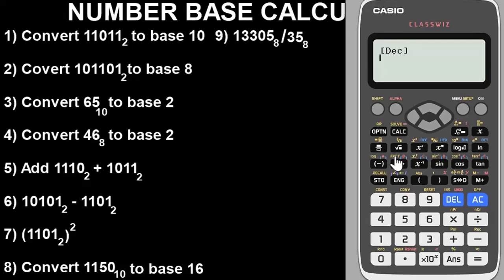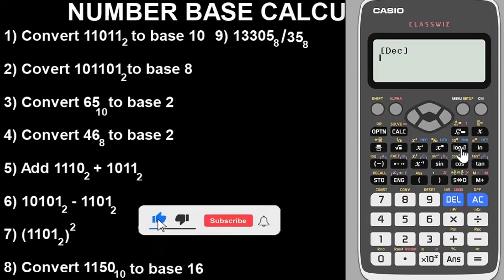Once you click on it, it will bring you to this screen. This shows Decimal, which is base 10. Now another term for decimal is Denary, or base 10 — they mean the same thing. Question one says convert 11011 base two to base 10. That means we need to put the calculator in Binary mode. Another word for binary is base two. To switch from Decimal to Binary, look at the Log button — you'll see 'BIN' on top, which stands for Binary. Press that button to change to Binary mode.